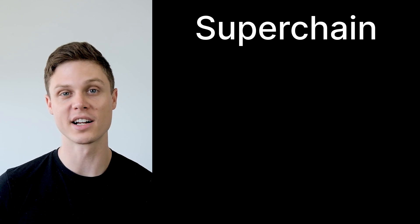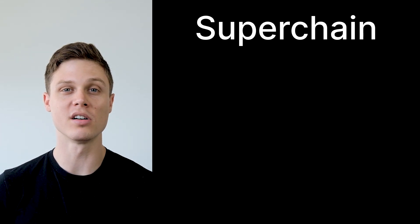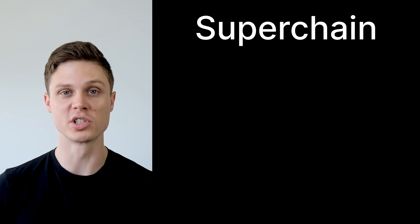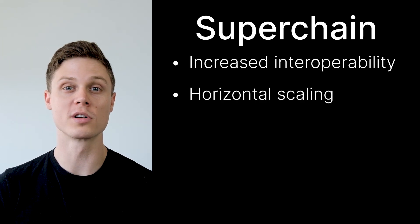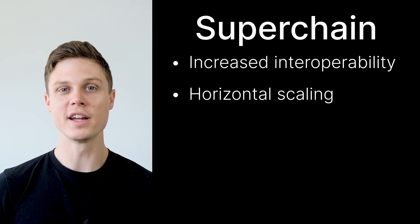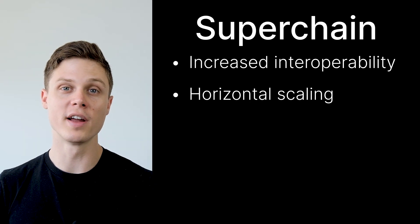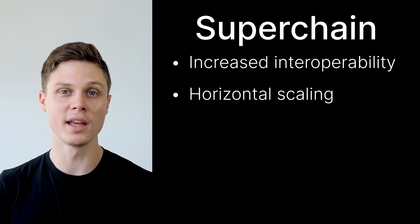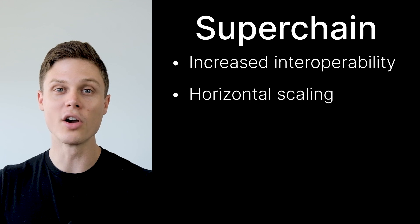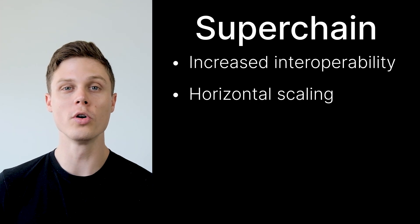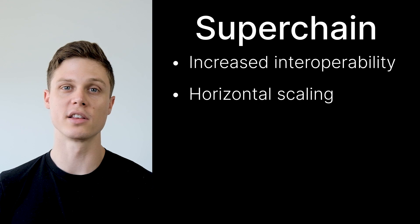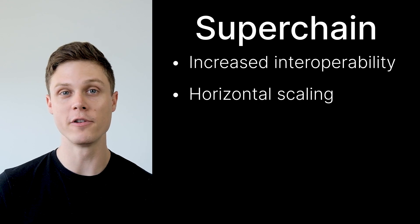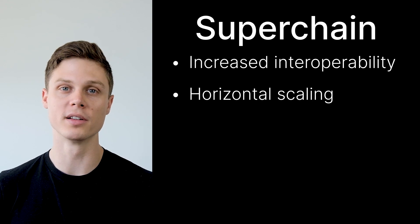As more and more OP stack chains are created, they become what Optimism is calling a superchain, with increased interoperability and horizontal scaling. Instead of every individual blockchain innovating and developing in their own silo, we'll have a whole big group of chains and developers innovating together. This superchain could really be the future of blockchains as we know it.